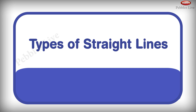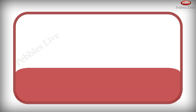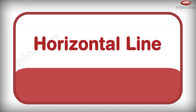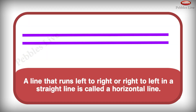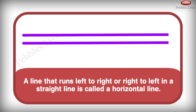Types of straight lines: Horizontal Line, Vertical Line, Slanting Line. A line that runs left to right or right to left in a straight line is called a horizontal line.